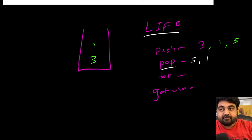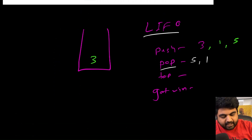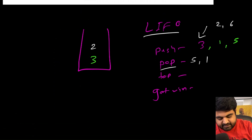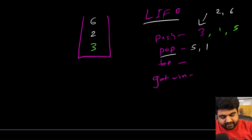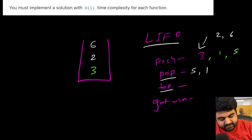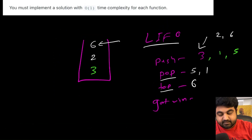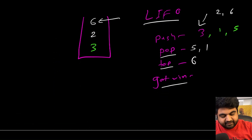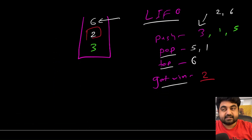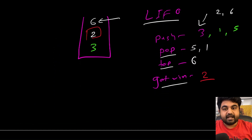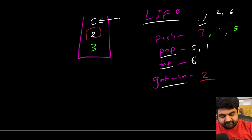If we pop once again, we get value one. After that, if we push two more elements — say two and six — we have elements two and six in the stack. If we do the top operation, it should return six because that is the top element. And if we do getMin, it should return two, because that is the current minimum element inside the stack.